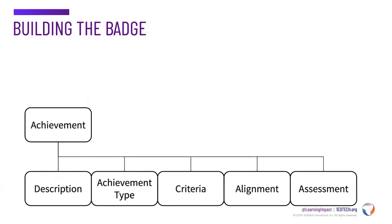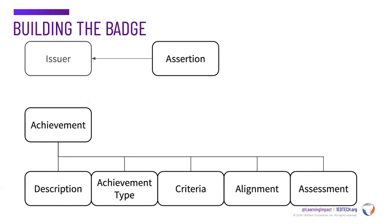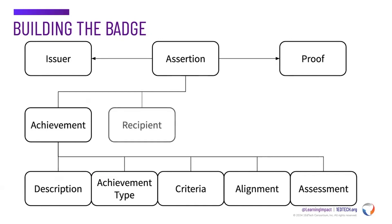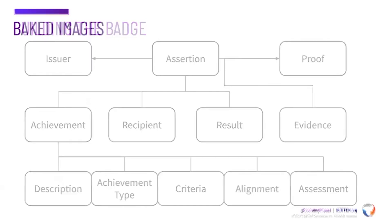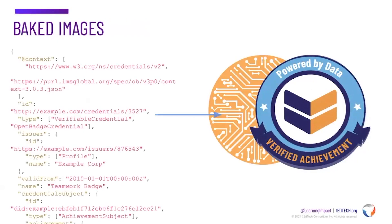When someone has earned the badge, you build the assertion by connecting the issuer and the proof to the achievement and the recipient. OpenBadges also defines data describing the results of the criteria or assessment and allows for embedded or linked electronic forms of evidence, such as documents or images. Through an optional process known as baking, the badge image and the JSON are combined to create a complete OpenBadges version 3.0 credential. The issued badge is now ready for the earner and can be shared or downloaded.